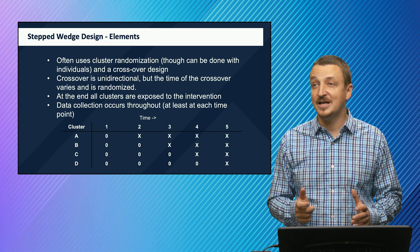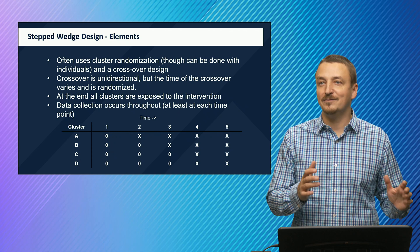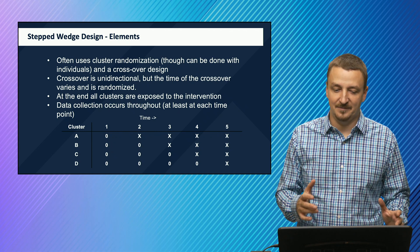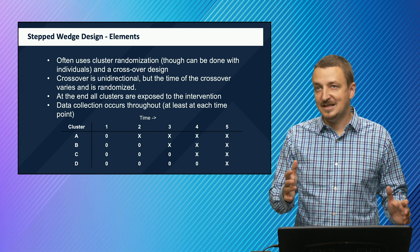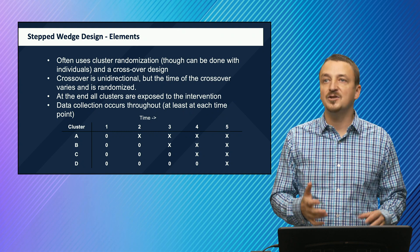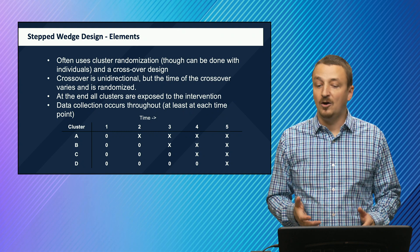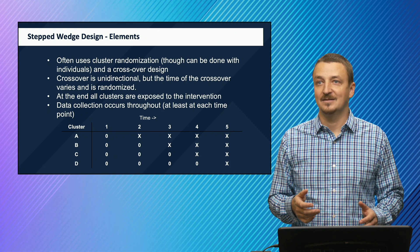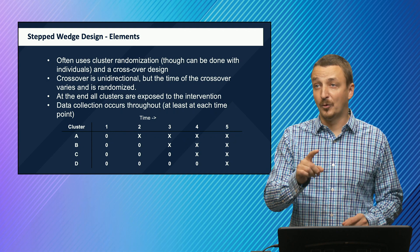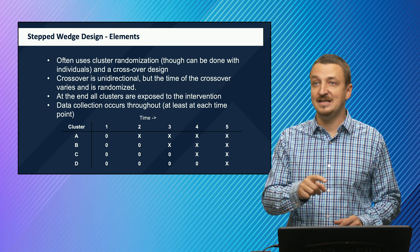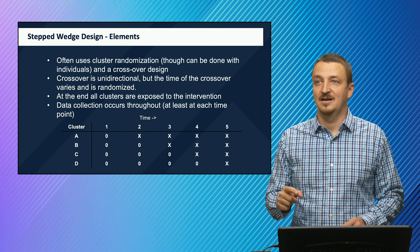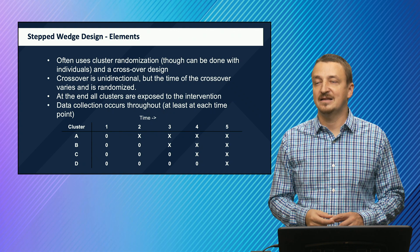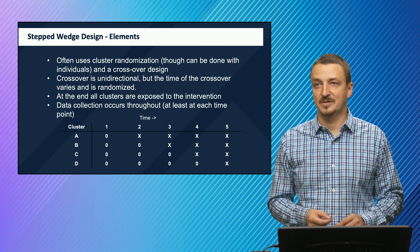This also means that not all clusters are necessarily receiving the intervention for the same period of time. A stepped wedge design often uses cluster randomization, although it can also be done with individuals and a crossover design. Importantly, the crossover here is unidirectional—which differs from the standard crossover design—but the time of the crossover varies and is randomized.